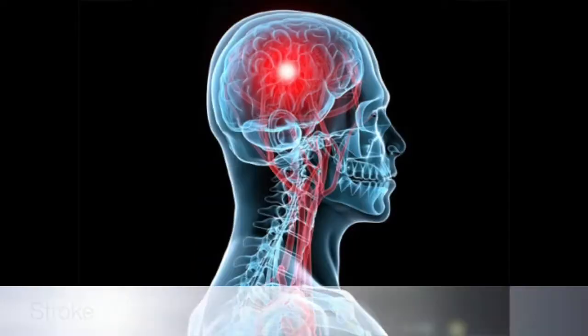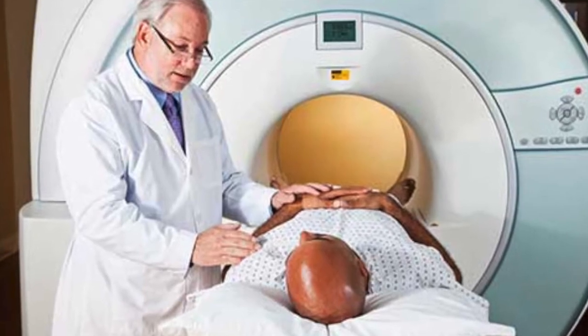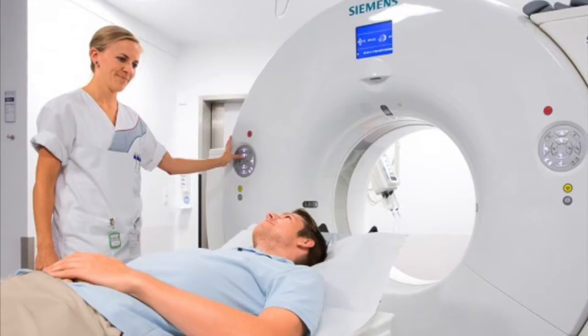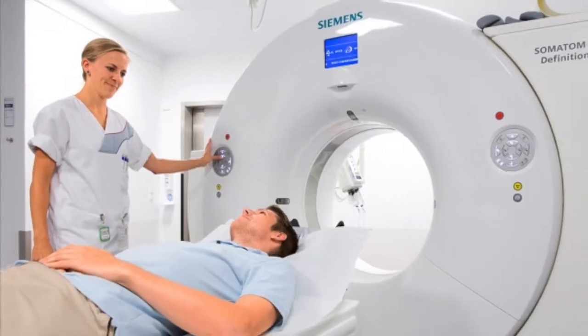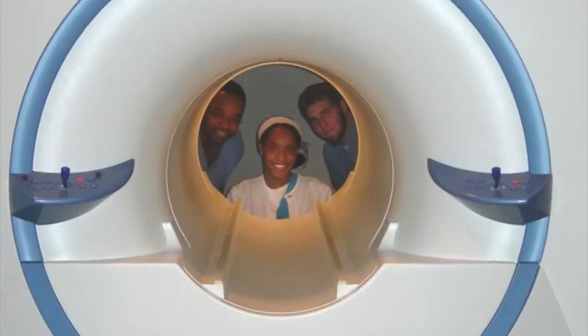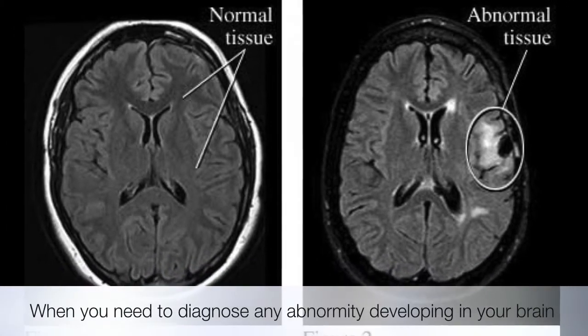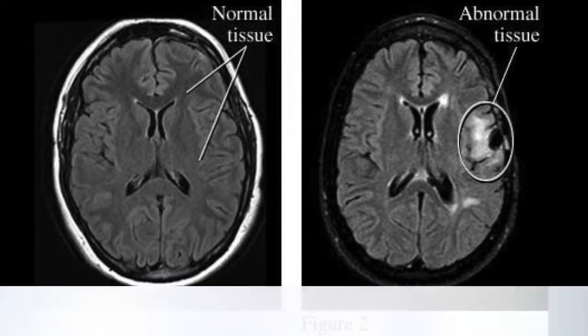If you have a disorder in your brain — a problem such as a stroke or a tumor — use an MRI. When you need to diagnose any abnormality developing in your brain, use an MRI.